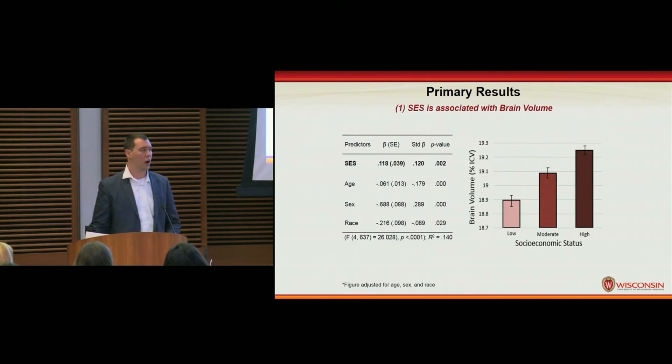Getting into our primary aim, we found that SES was significantly associated with brain volume while accounting for the variance explained by age, sex, and race. This is being depicted here with the figure on the right, where individuals of high SES displayed greater brain volume than those of moderate and low SES standing.